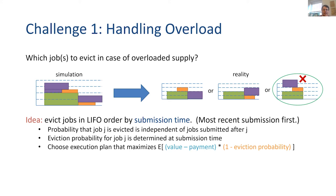One of the ideas of the paper is to evict in a particular way: reverse order by submission time — not arrival time of the job. It doesn't depend on the actual value or size of the job; just the most recently submitted job gets evicted first. We do it for incentive reasons. From the perspective of some job J: job J knows that any job submitted after job J is going to be evicted first. So job J only gets evicted if there's still a problem after everyone submitted after them is evicted, meaning they can figure out their eviction probability given jobs submitted before them.